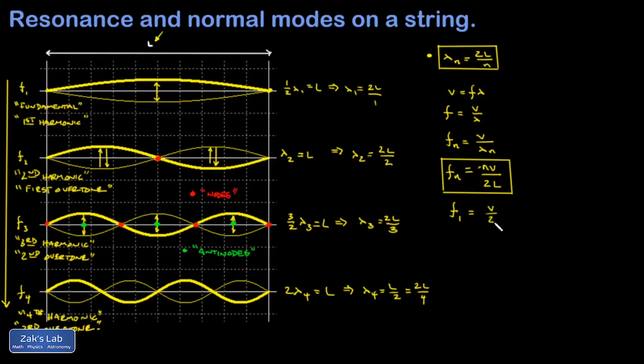And then I realized the v over two L in this formula could then just be replaced with f one. And we discover something really useful. The f n is n times f one. In other words, every resonant frequency on the string is an integer multiple of the fundamental frequency.